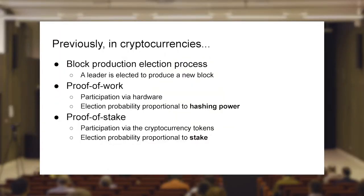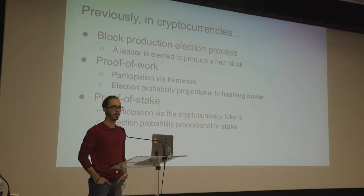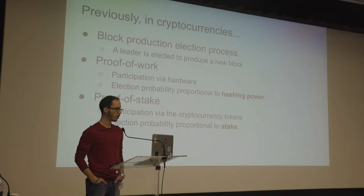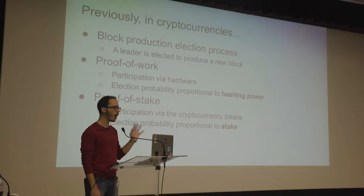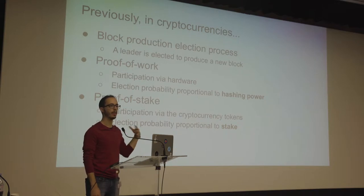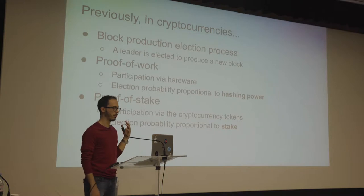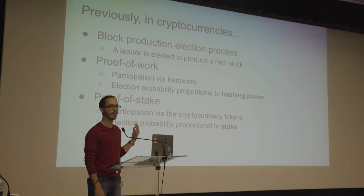To start, I'm going to give a very brief introduction — a cover of what exists so far, because we've seen these things being discussed a lot. In every cryptocurrency, a core part is the block production election process: how is the leader elected in order to produce the block? The two major mechanisms are proof-of-work, where participation is done via hardware and hashing power decides who is eligible to produce blocks, and proof-of-stake, where participation is done via the tokens maintained by the system — called stake — and a leader is elected proportionally to how much stake they have.